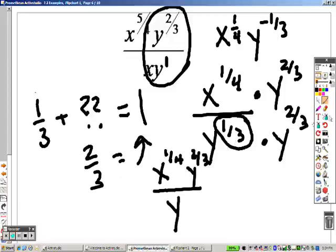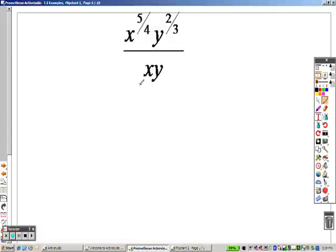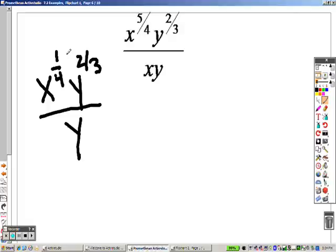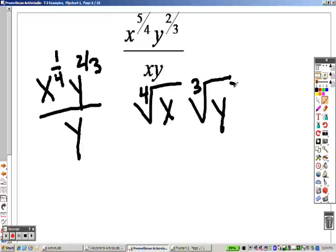Okay, now, that's all fine and dandy. This is a great answer. Except, let me get this looking pretty for you. It's all fine and dandy except if I wanted you to rewrite that as roots, you couldn't combine them together. Because, you would have the 4th root of x and you'd have the 3rd root of y squared all over y.